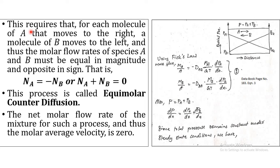To maintain the total molar concentration C constant throughout, for each molecule of A that moves to the right, a molecule of B must move to the left. Thus the molar flow rate of species A and B must be equal in magnitude and opposite in sign: NA equals minus NB, or NA plus NB equals zero. This process is called equimolar counter diffusion. The net molar flow rate of the mixture and thus the molar average velocity is zero.